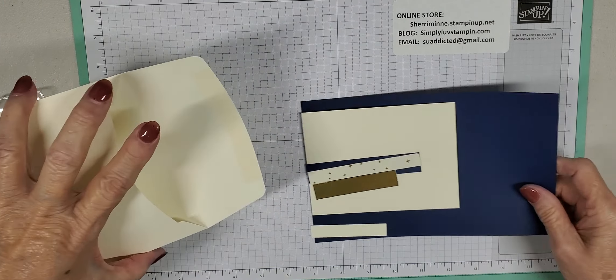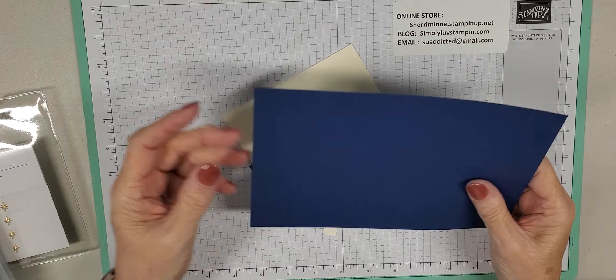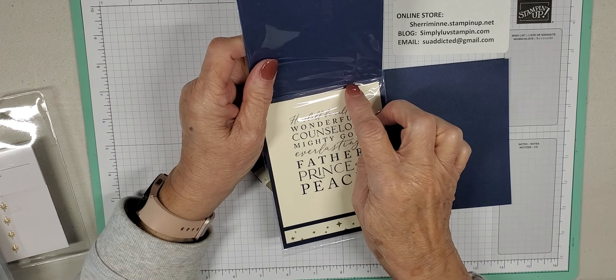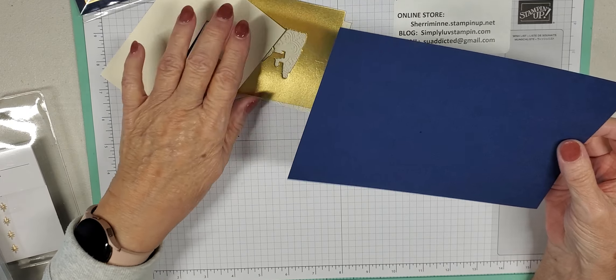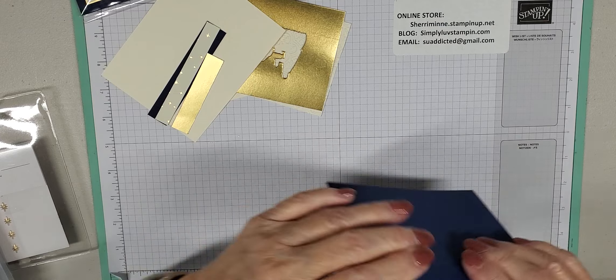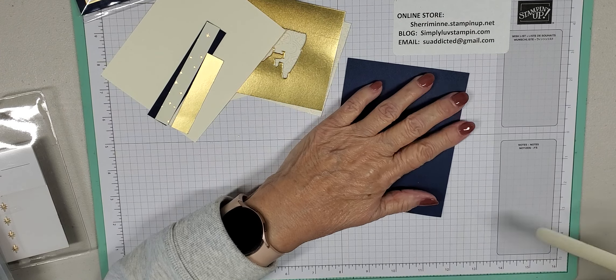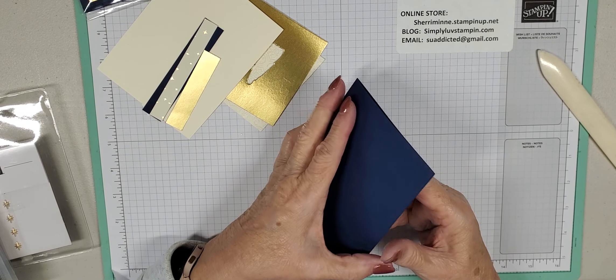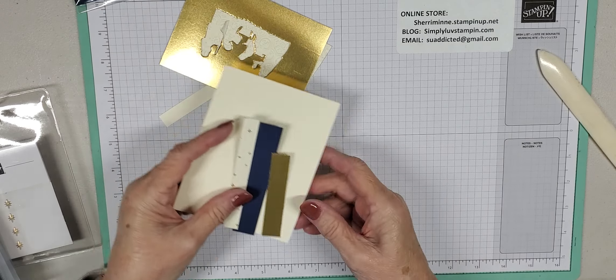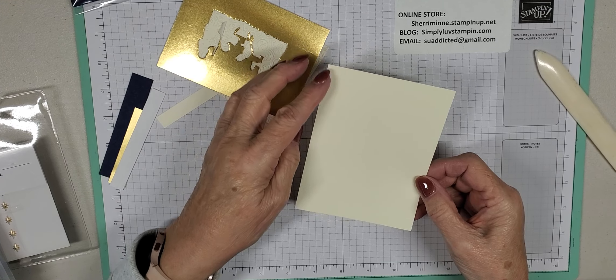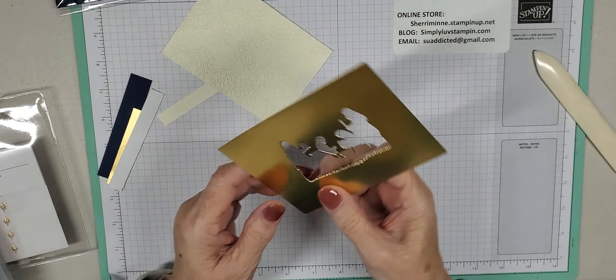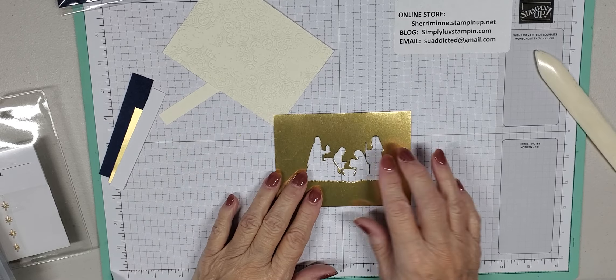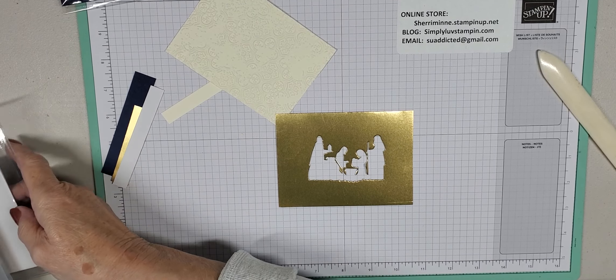In your packet you have an envelope, a card base - you'll notice a little difference on this card. I opened it with the 11 by 4.25 scored at 5.5, and when I was cutting all my packets I just got in my rut of the way I normally do a card. This one is going to be 8.5 by 5.5 scored at 4.25 and it worked out fine - you can do it either way. You're going to have a piece of 4 by 5.25 that's going to go on our inside.